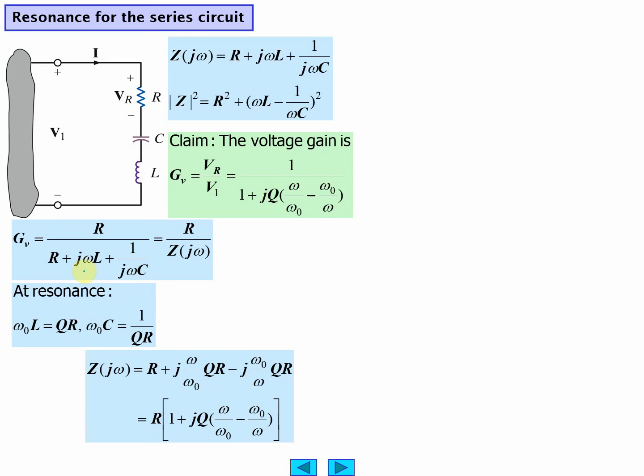QR is omega naught L, and at resonance omega is equal to omega naught, so we can substitute this term, is going to be QR.